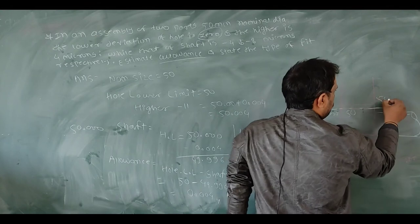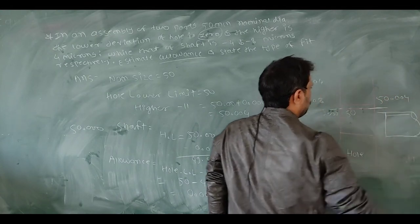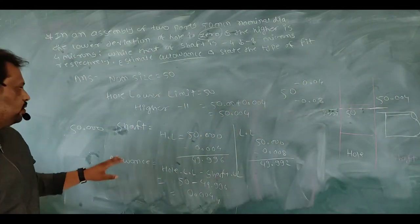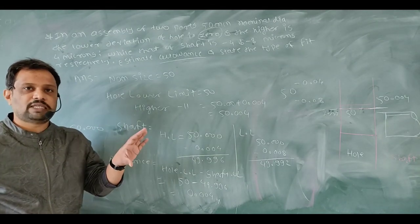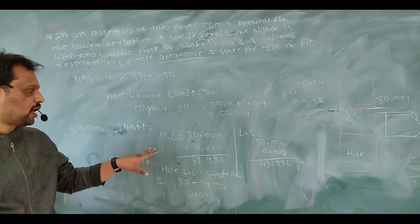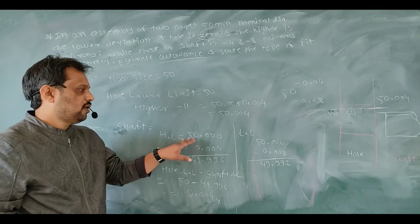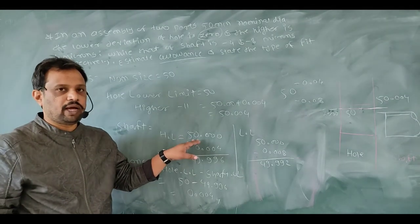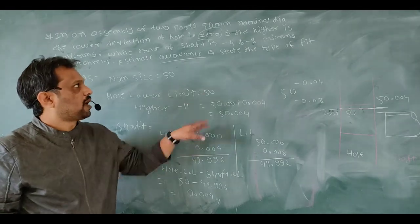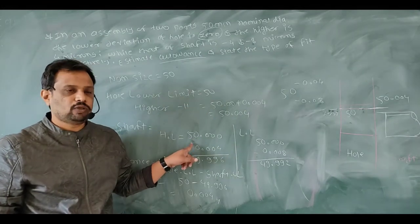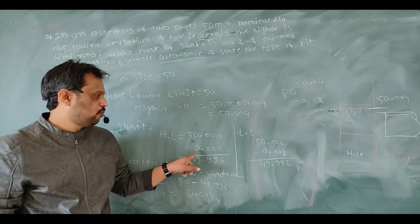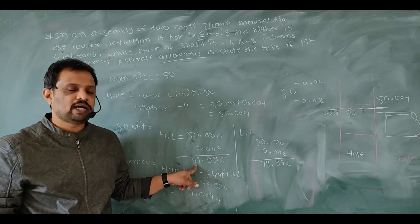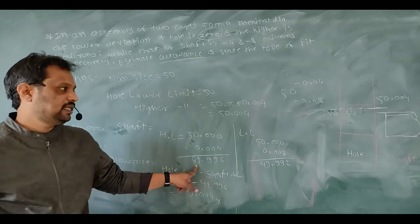After that, I have to calculate the shaft higher limit and lower limit. The nominal size of shaft is 50mm. For calculating the higher limit of shaft, I deduct 4 microns from 50mm, giving 49.996mm. For the lower limit, deducting 8 microns gives 49.992mm.